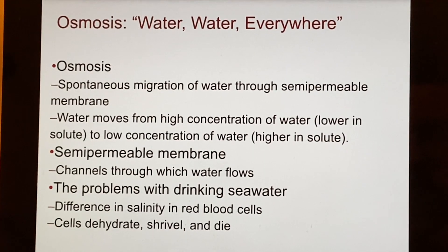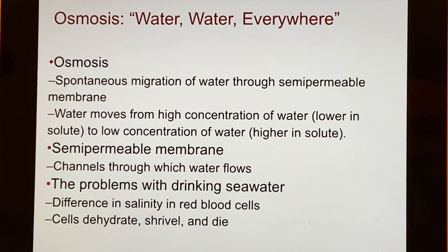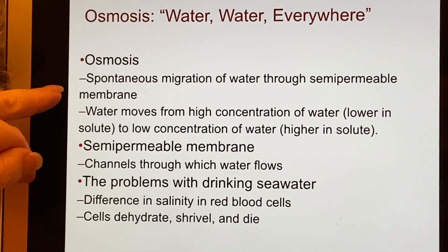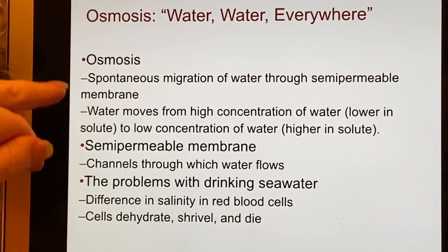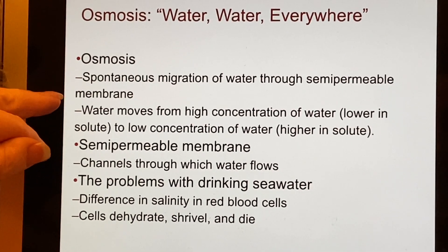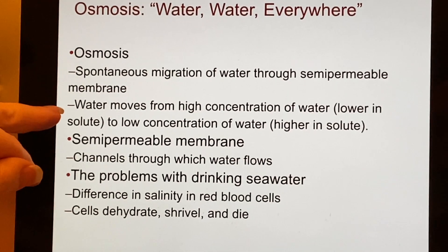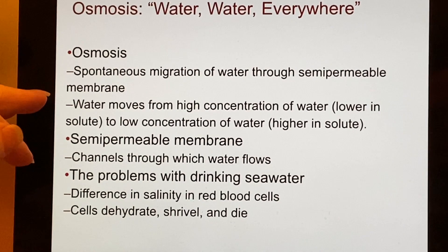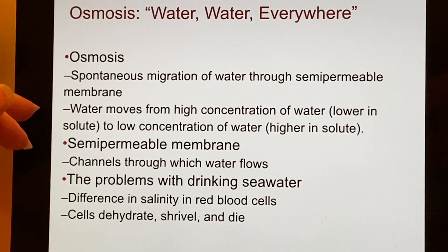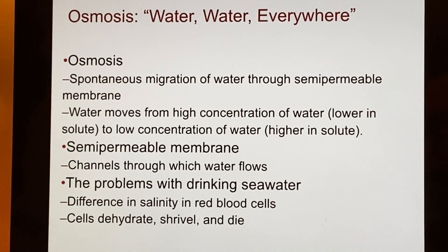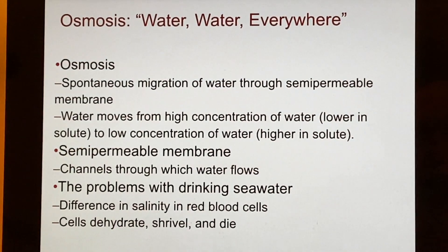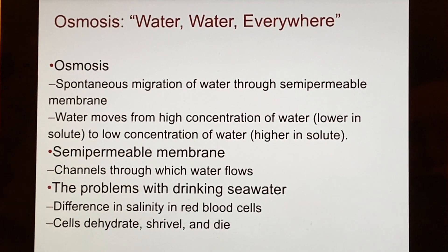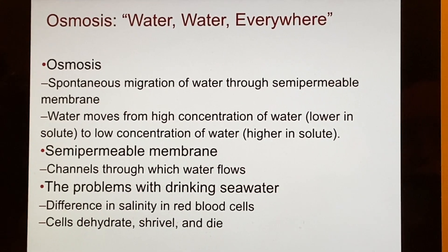In osmosis, there will be a migration of water through a semi-permeable membrane — it will spontaneously flow through that membrane when it has a choice of which side to be on. That requires two different conditions on each side. If things were exactly the same on both sides, the amount moving to the right or left would be exactly the same and you wouldn't notice anything.